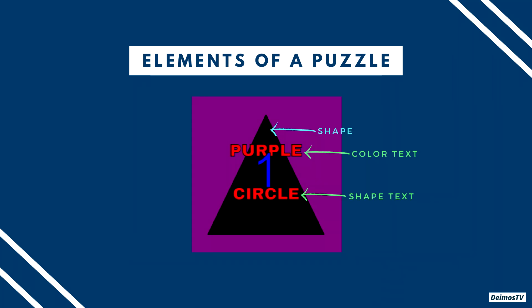The next set is the text, which has the color text and the shape text. I call them 'text' because they have the word 'text' in their names. Here, you don't need to think about any color or shapes — you just have to copy the word of the color or shape shown in the puzzle. So here it says 'purple' and 'circle.' When asked what the color text is, your answer should be 'purple.' If asked about the shape text, it's 'circle.' You don't have to think about their actual color or anything else — you just have to copy.